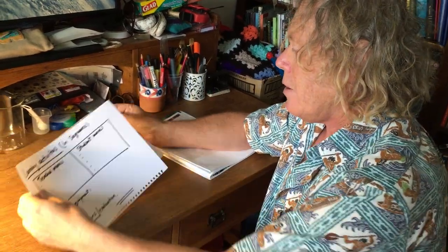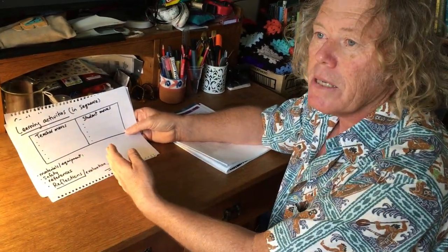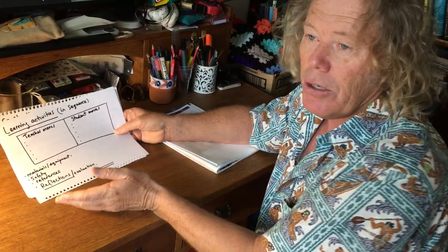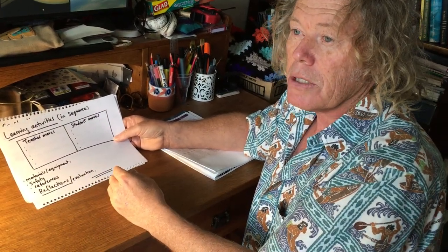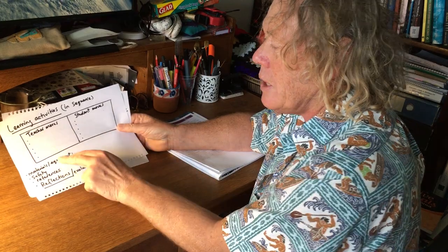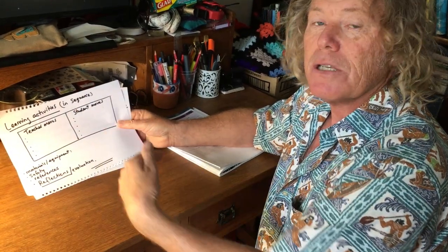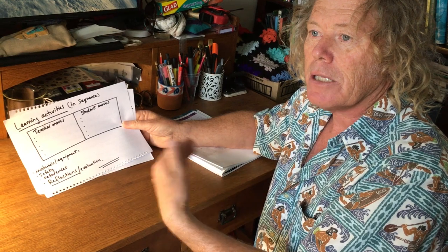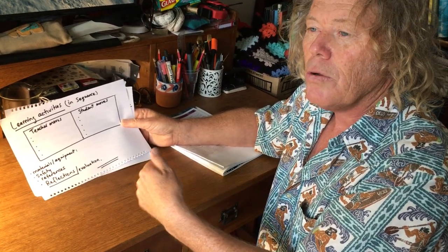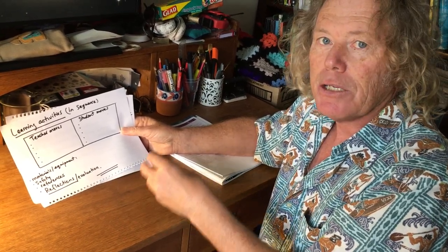Then comes part two: your learning activities. Usually a lesson plan is divided into two columns, where you write down the teacher moves — what the teacher is doing and what the students are doing — so you can see a sequence of events. Usually the best lessons are chopped into 10–15 minute lots, which keeps engagement high so students never get bored and there's always a change of pace.